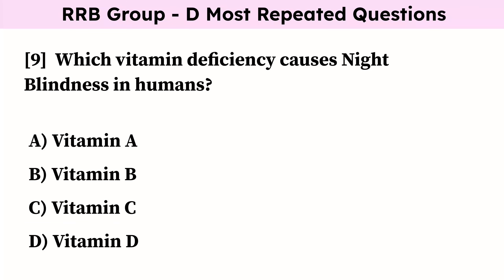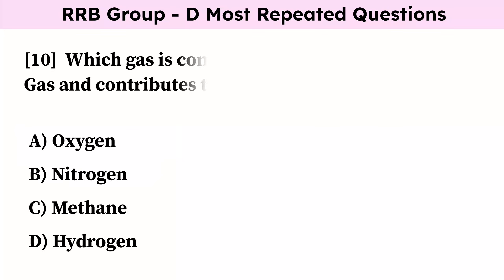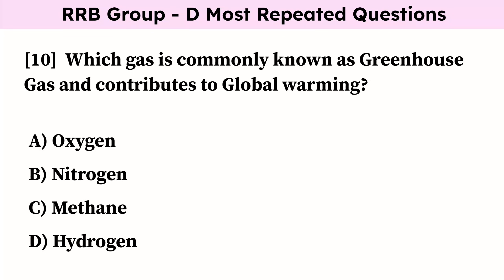Which vitamin deficiency causes night blindness in humans? Correct answer is vitamin A. Which gas is commonly known as greenhouse gas and contributes to global warming? Correct answer is methane.